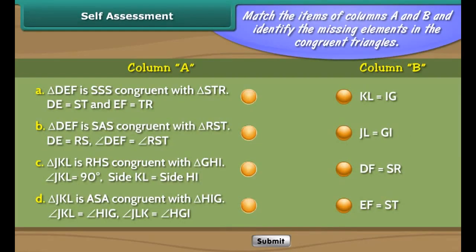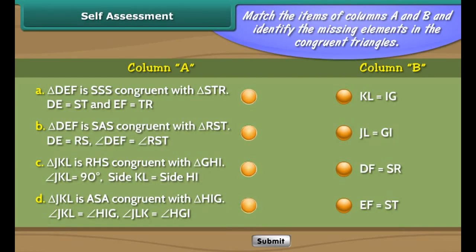Self-assessment: match the items of columns A and B and identify the missing elements in the congruent triangles. Drag and drop the options at the appropriate places on the triangles.